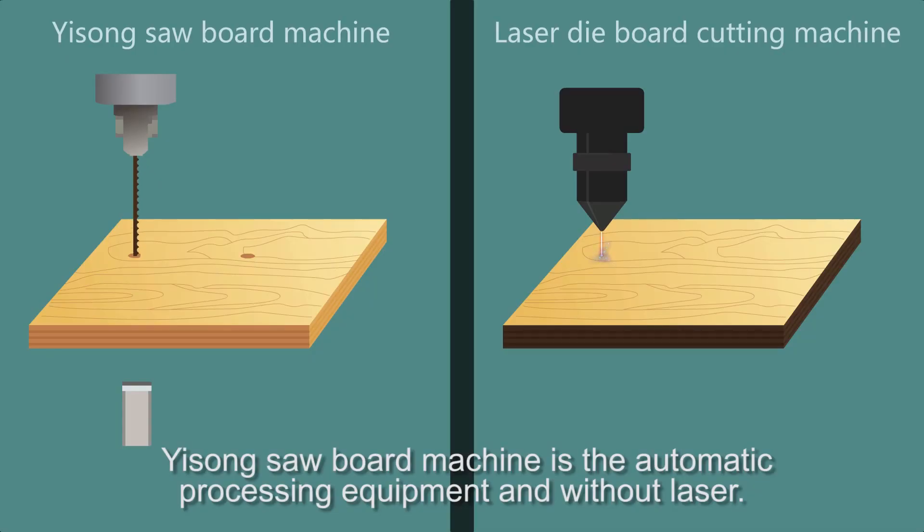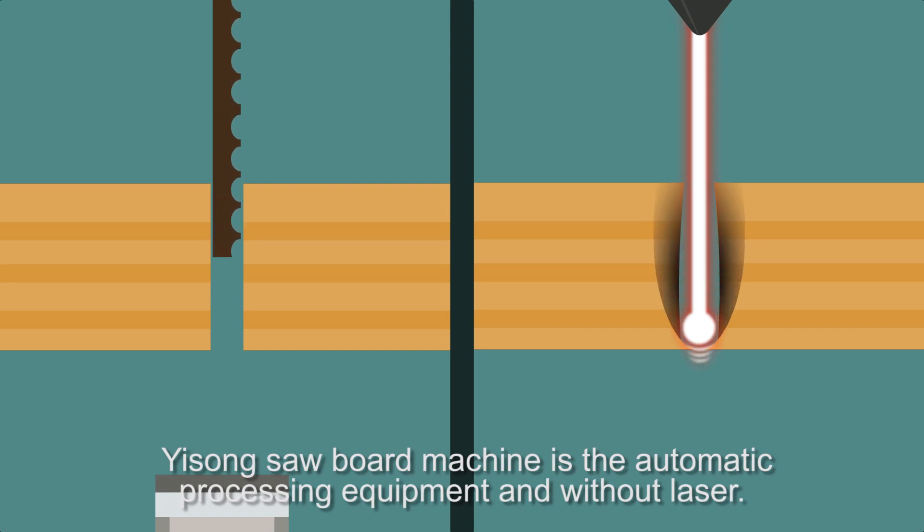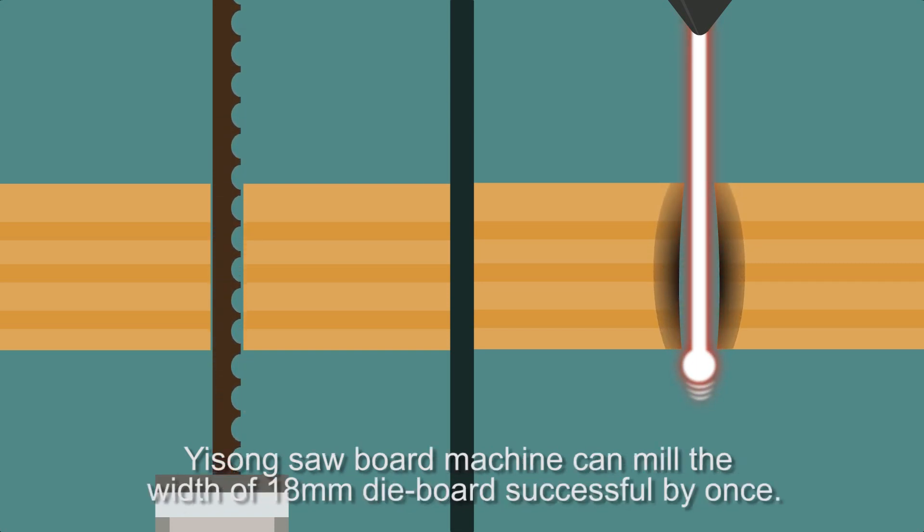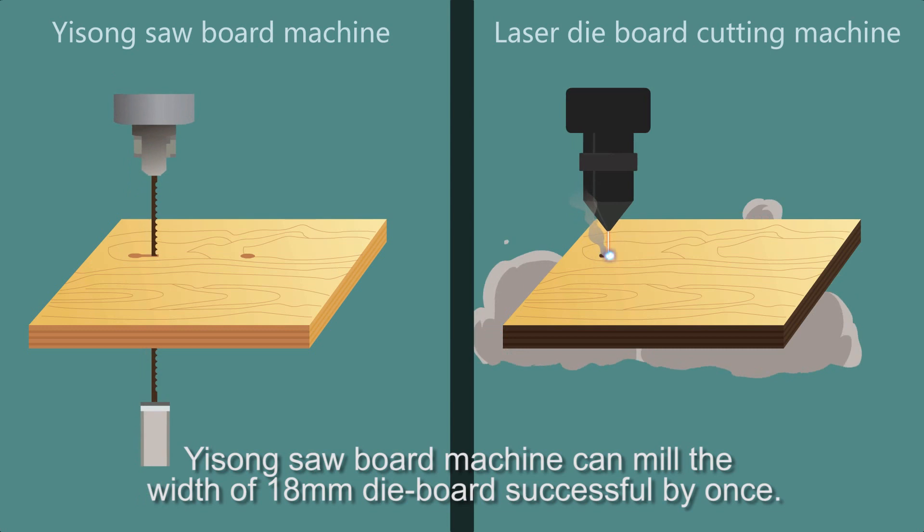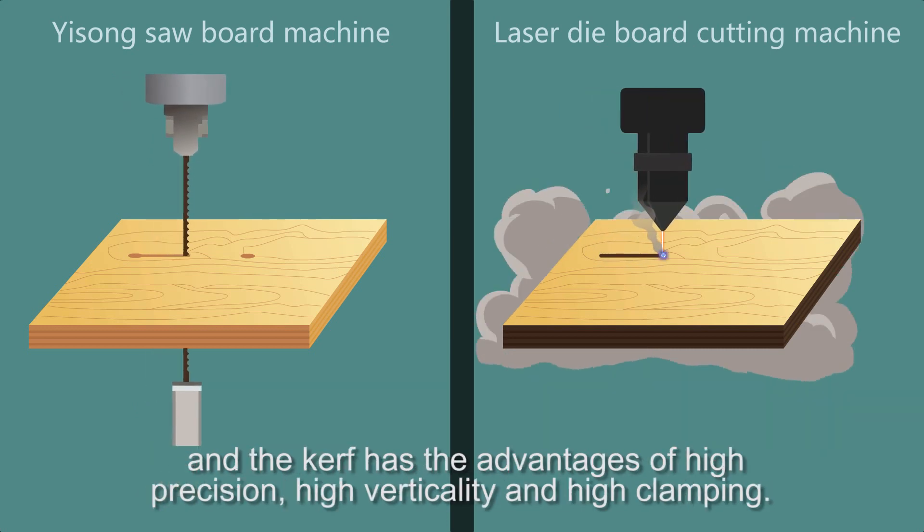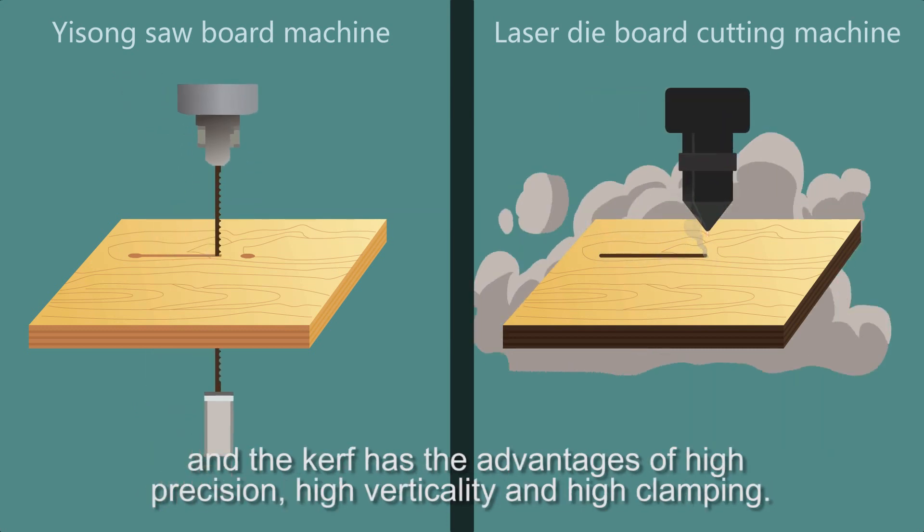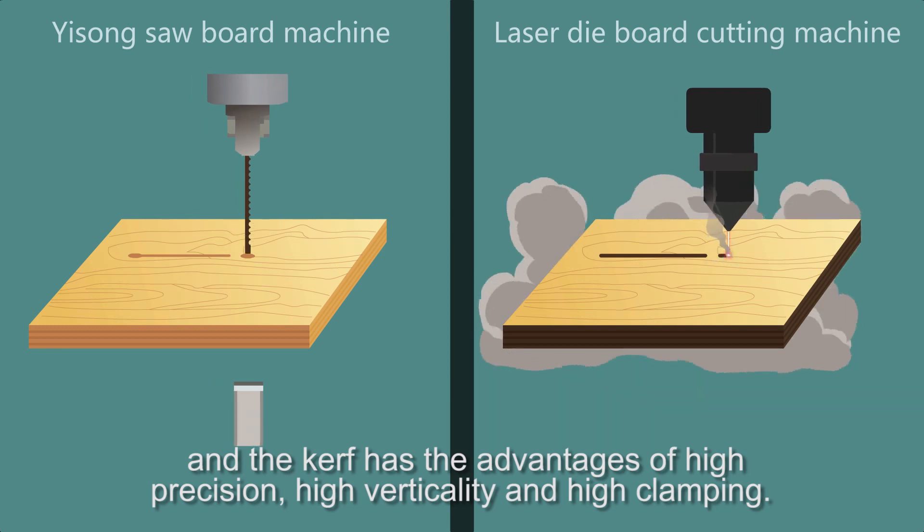Yizong Sawing Board Machine is automatic processing equipment without laser. The sawing board machine can mill the width of 18mm die board successfully by once. The cost of processing is low.